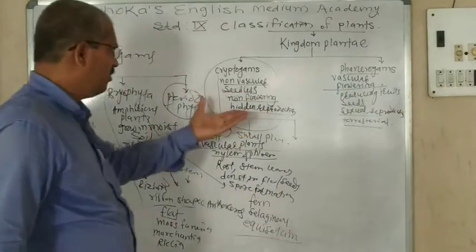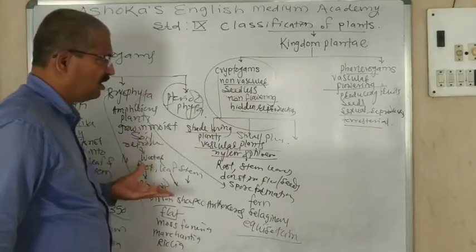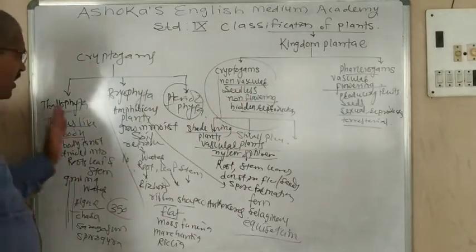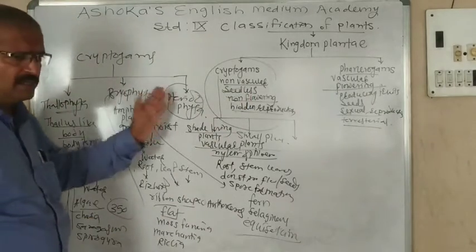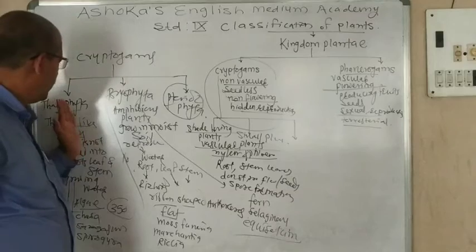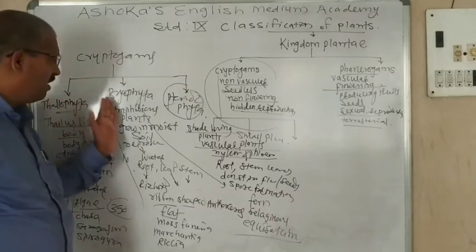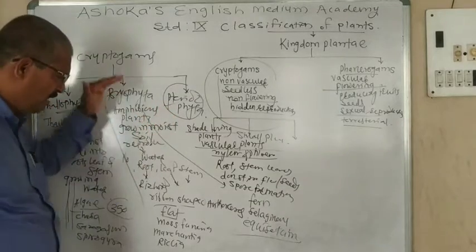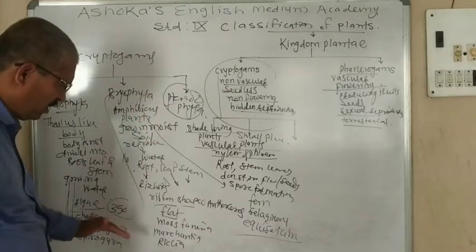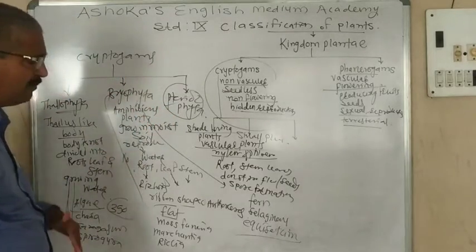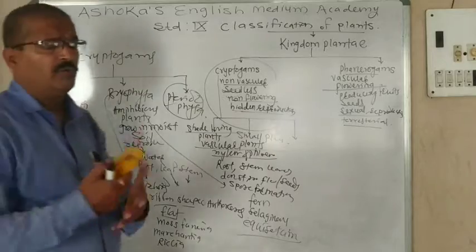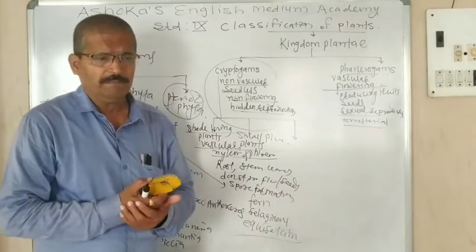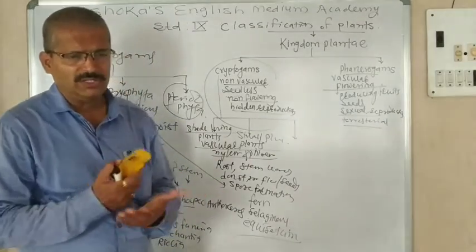We have studied about the Cryptogamae. Cryptogamae is divided into three parts: Thallophyta, Bryophyta, and Pteridophyta. All the examples have been written — you should read them once again at home, study the examples, and see the pictures.